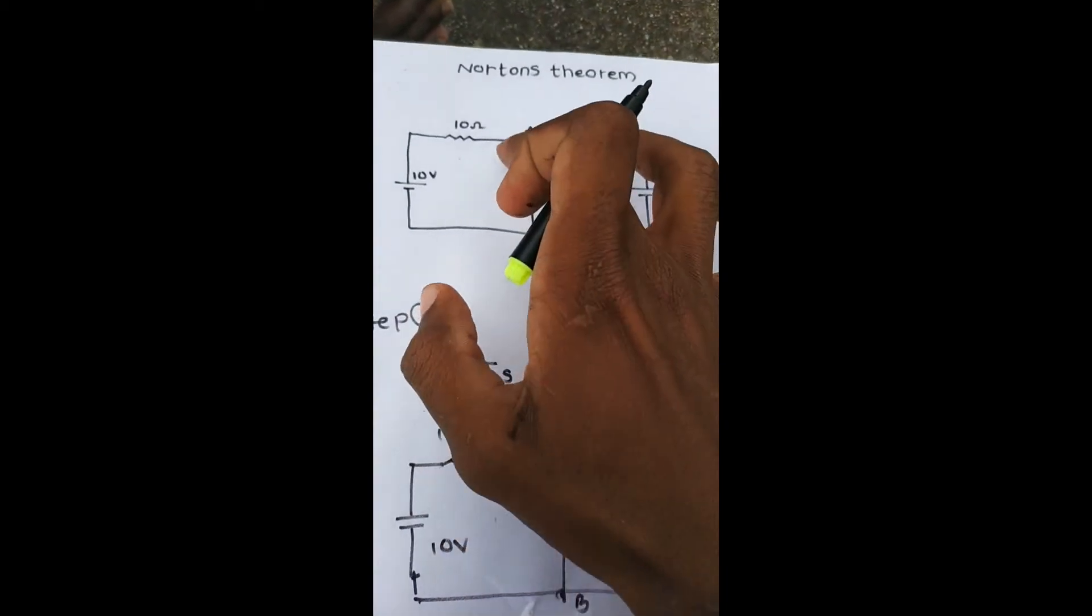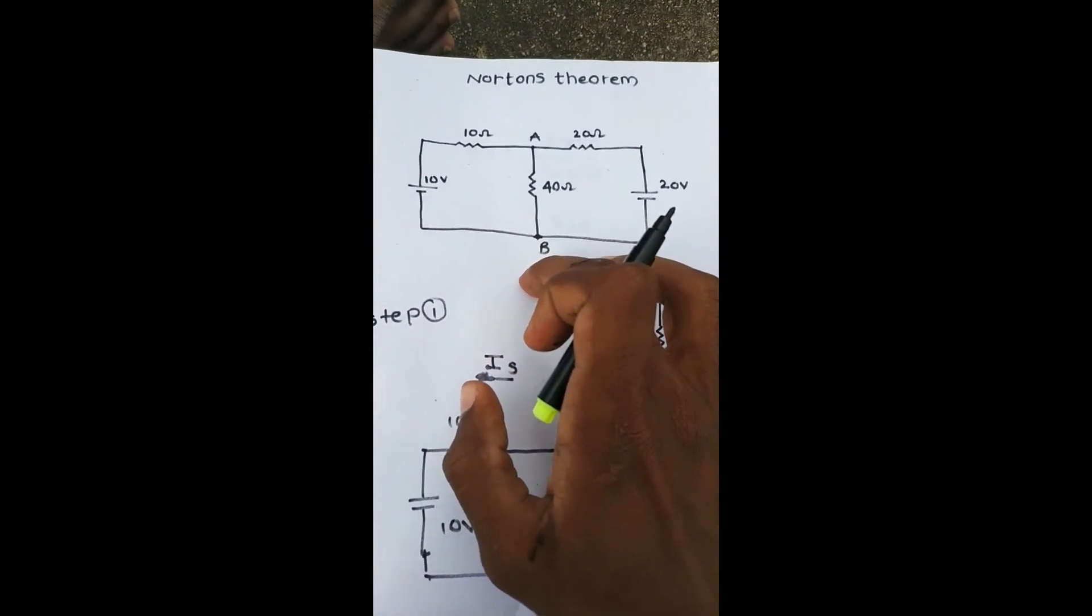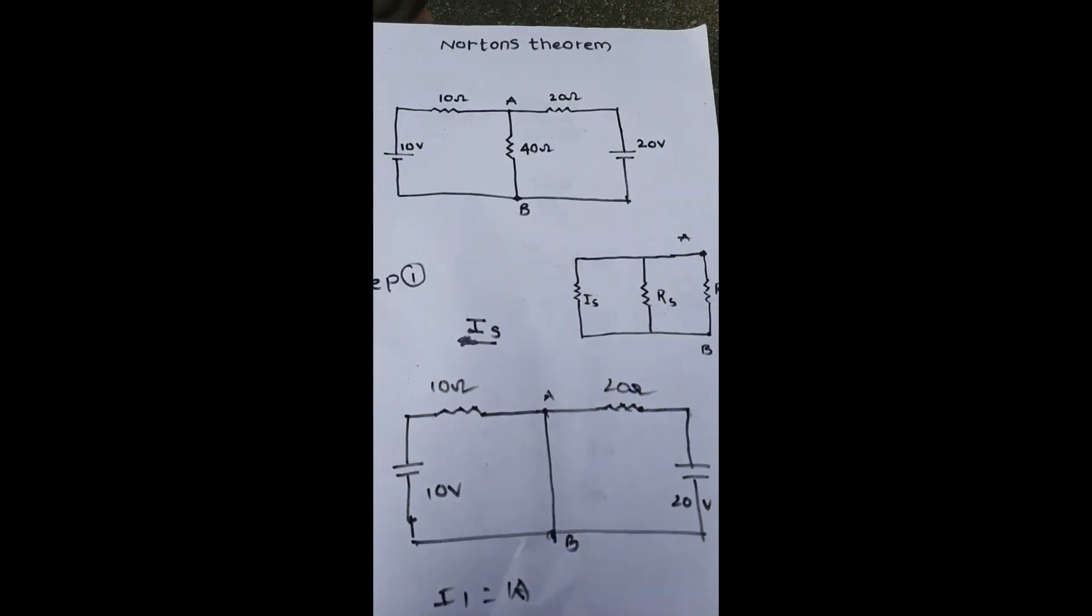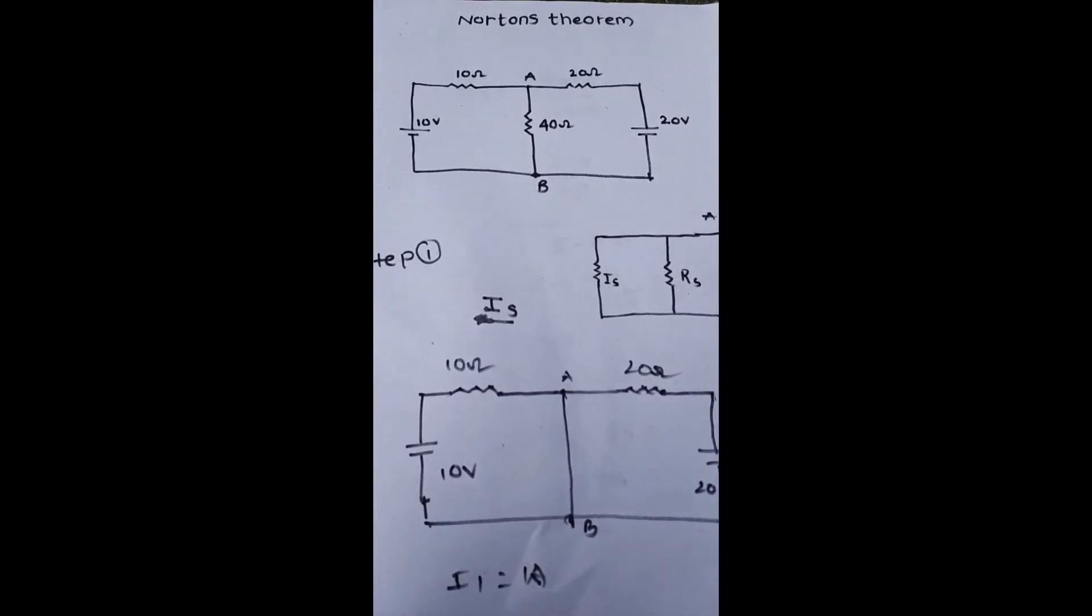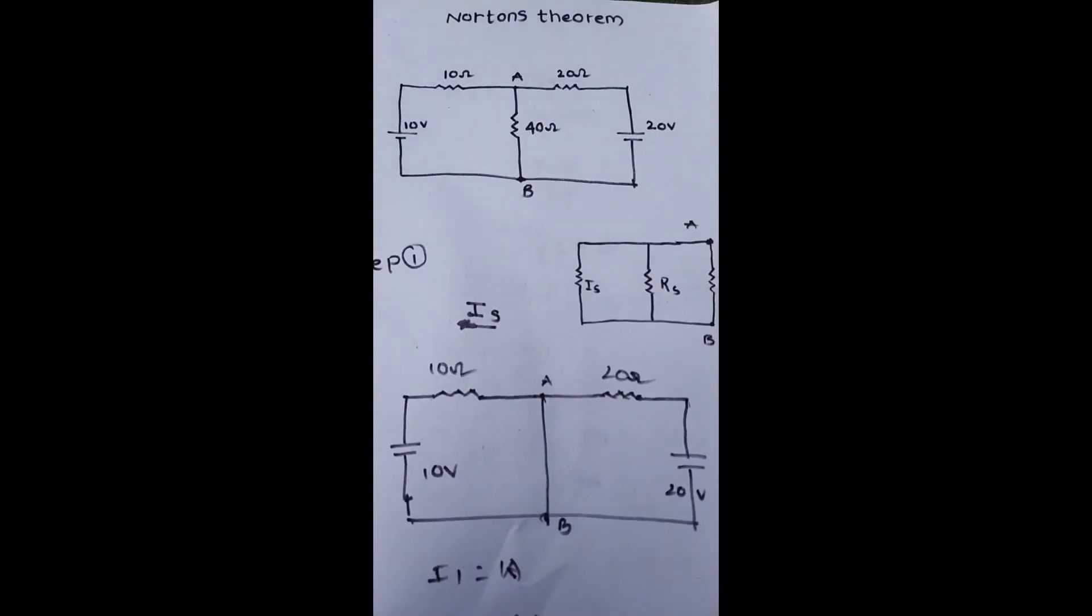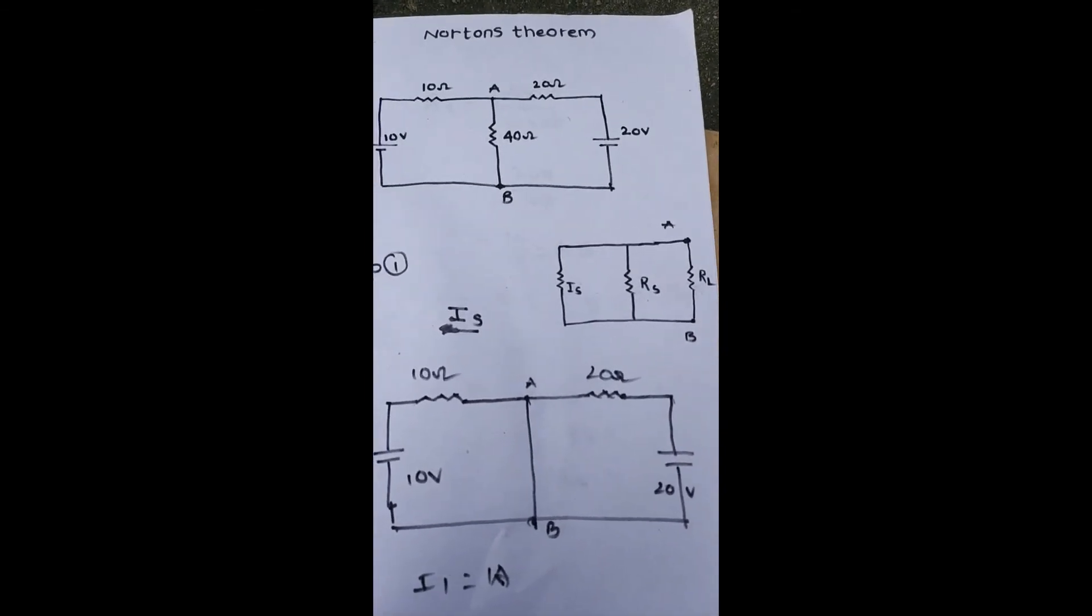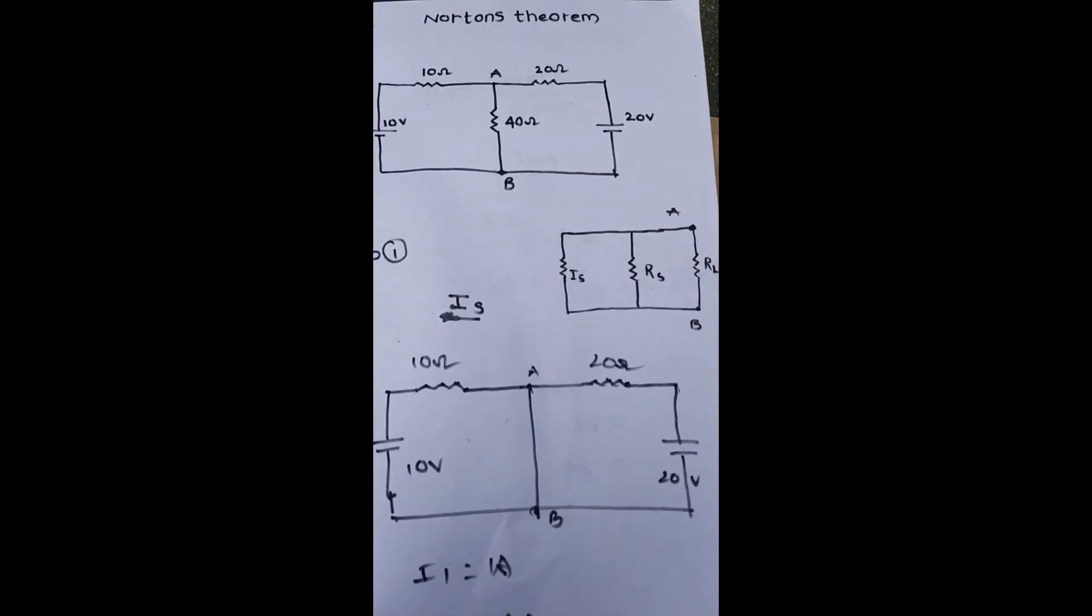This circuit, that means at AB point, the current passing through is 0.286 amperes. This current is found through Norton's theorem. If you have any doubts about this problem, please comment. If you like this video, please like, share, and don't forget to subscribe.